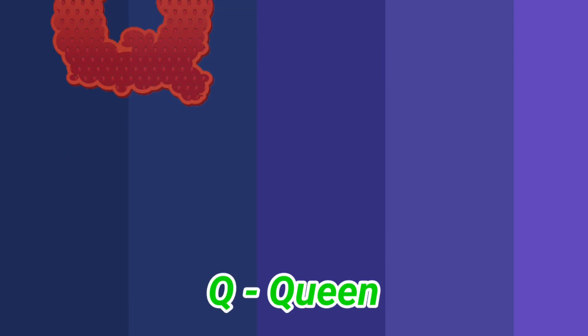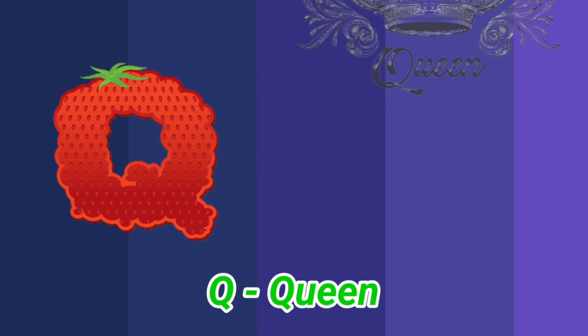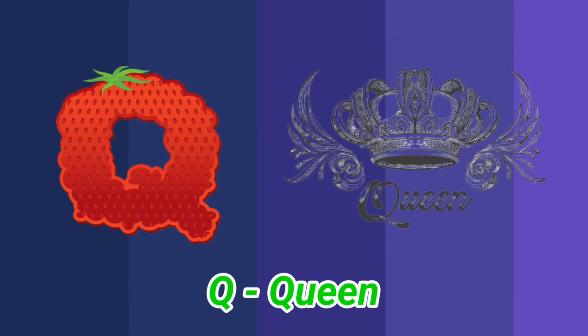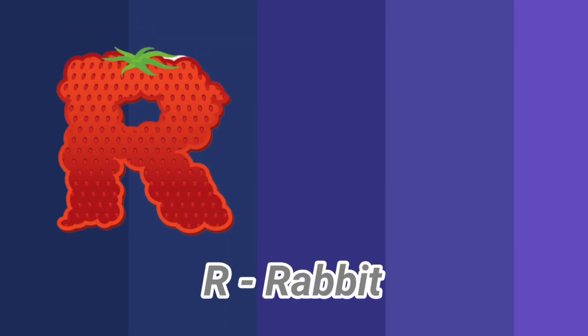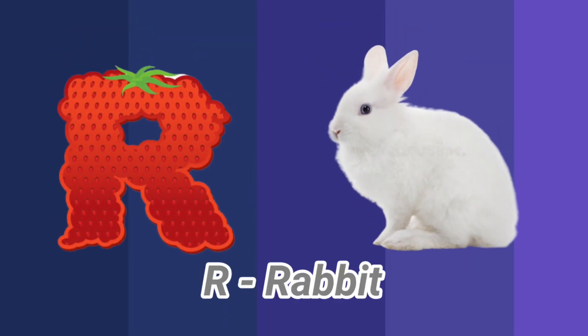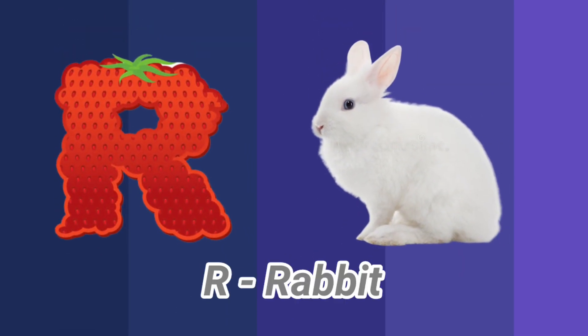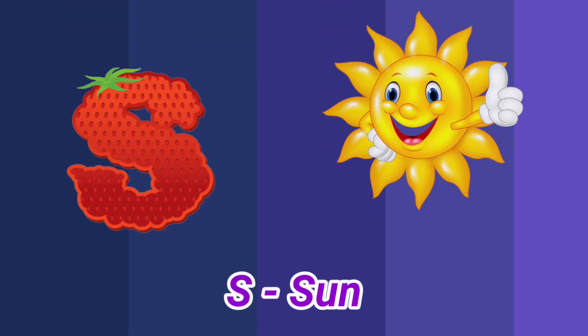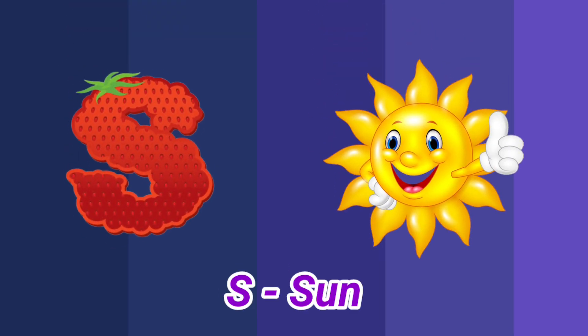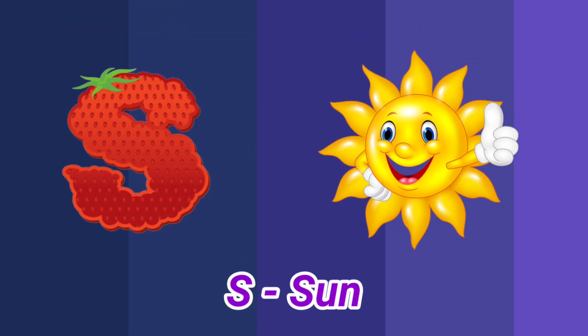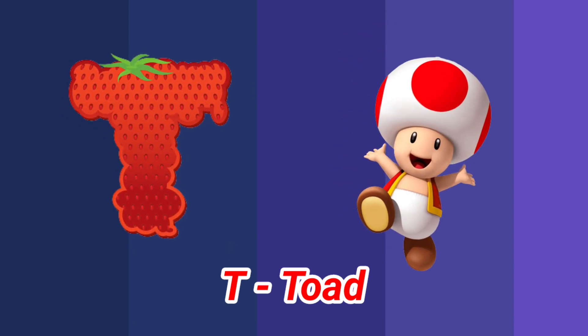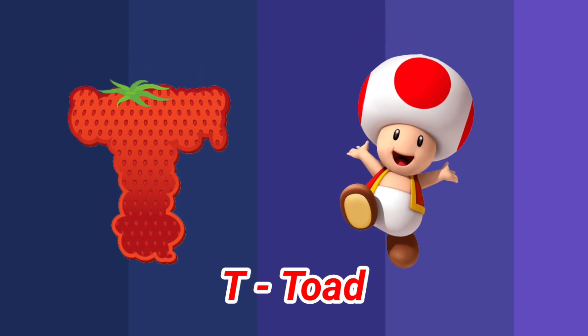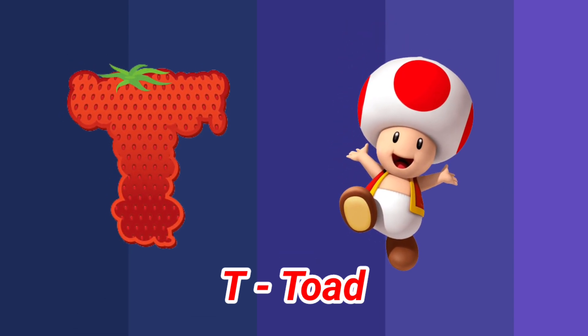Q is for queen, k-k-queen. R is for rabbit, r-r-rabbit. S is for sun, s-s-sun. T is for toad, t-t-toad.